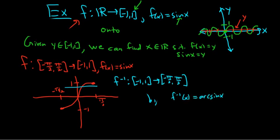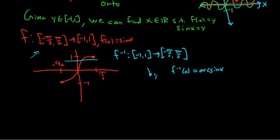Similar things are done for cosine and all the other trig functions. In order to find inverse functions, we tend to restrict the domains so that they become bijections and so that we can find an inverse.